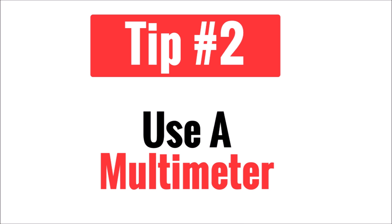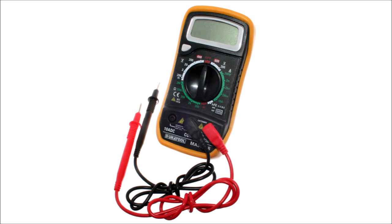Tip number two is to use a multimeter. This tool is your best friend for testing and troubleshooting in solar. You can use it to identify components that are bad but I find that I use it to measure voltage all the time.